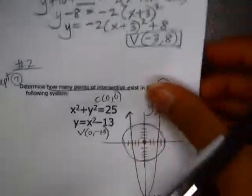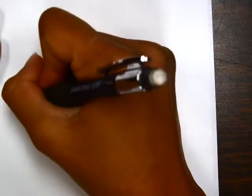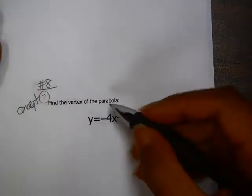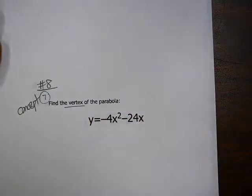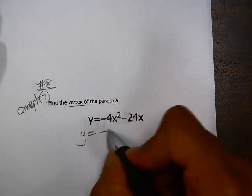Problem number 8 on the unit 3 review is also concept 7. Find the vertex of the parabola. So in order to find the vertex, we need to get this in graphing form. I'm going to start by factoring out the negative 4 and then completing the square.